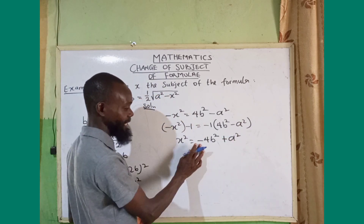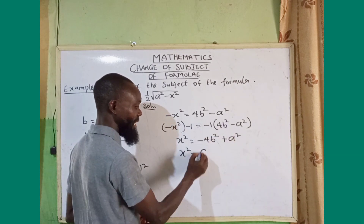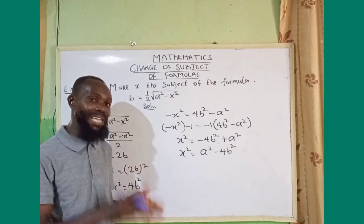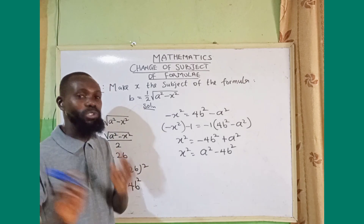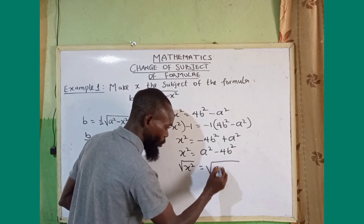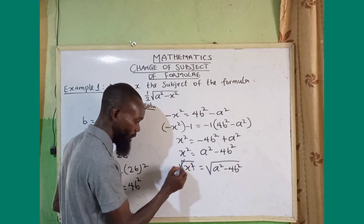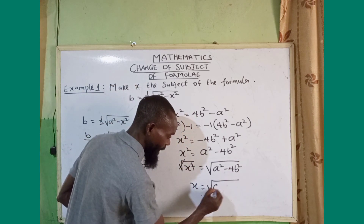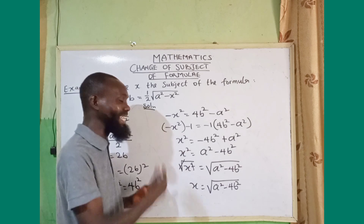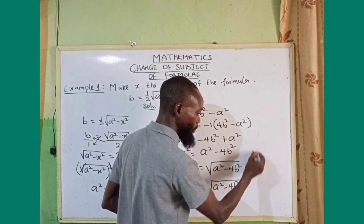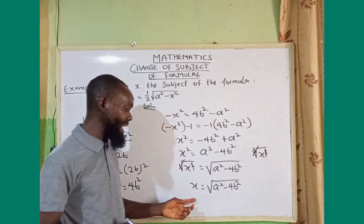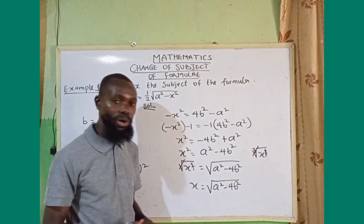Rearranging, I have x squared equals a squared minus 4b squared. Now I need x, not x squared, so I take the square root of both sides. Square root cancels square, giving x equals the square root of a squared minus 4b squared. That is our answer for example one.